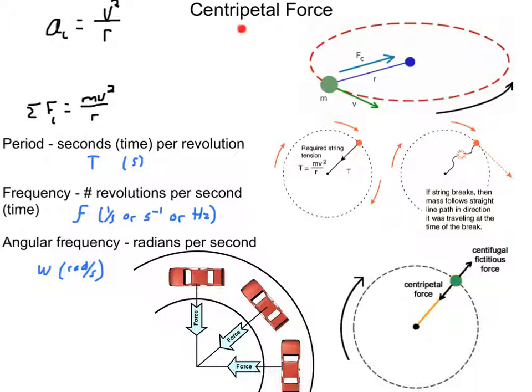Start out with, we're going to do centripetal force. Centripetal means center pointing, so this is any force that points to the center of a circle. And whenever you have a velocity that is moving tangential, and a force that is pointing along a radius of a circle, it's going to cause that object to move in a circle.